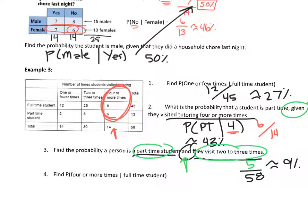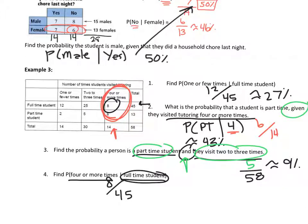Question four: find the probability they visit four or more times given they're a full-time student. Full-time students are the denominator: 45. Of those, how many go four or more times? Eight. So eight out of 45 is about 18%.